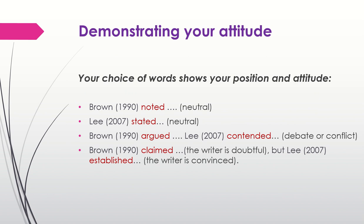For example, 'Brown noted,' 'Lee stated' — these are neutral verbs; the writer is probably just describing what Brown and Lee say. Then we have 'Brown argued,' 'Lee contended' — the writer shows a debate is going on and probably agrees with Lee's position. Then we have 'Brown claimed' — the writer is doubtful and doesn't agree with Brown's position. But 'Lee established' — so the writer is convinced and agrees with Lee's position.